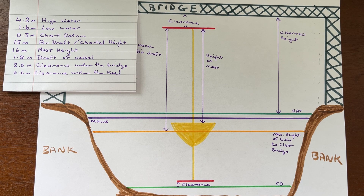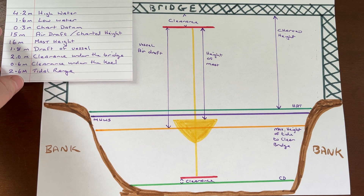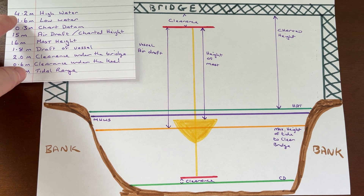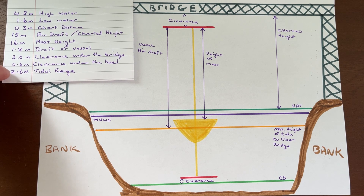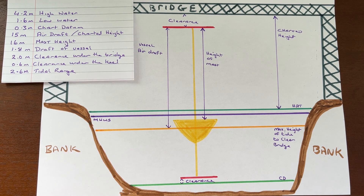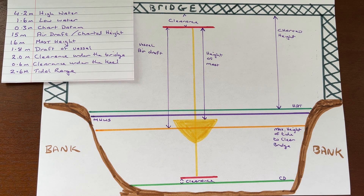Looking at our tidal range calculations: high water is 4.2 meters and low water is 1.6 meters, giving us a tidal range of 2.6 meters. So we know we can get through at some point in this tidal range. Using the tidal curve we can work out when we have a tidal height of 2.2 meters. We need to ensure we don't run aground either.